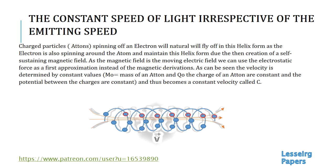As the charge is a constant and the mass of the atom is constant, the potential between the charges is constant. Thus, when you do the simple equation, you achieve that the velocity V is basically dependent on the mass and the charge. Therefore, as the mass and the charge are constants, so will the velocity V always be a constant, which we call C.